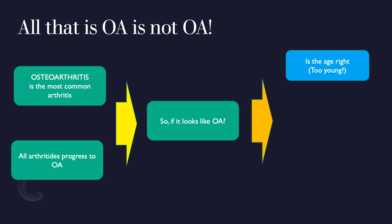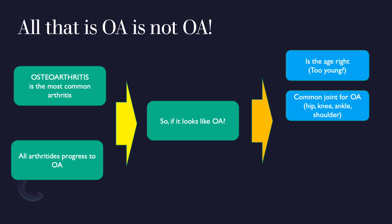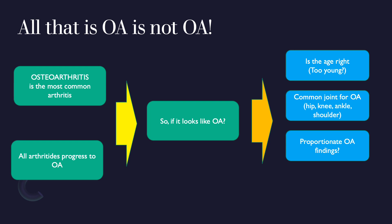What are the clues that tell you something is not primary osteoarthritis? Number one is age — if it's a very young patient, this would likely not be primary OA. Number two is joint location — if it's not a common weight-bearing joint for OA like the hip, knee, ankle, or sometimes the shoulder, that should raise an alarm. Number three involves the pattern of OA changes: joint space narrowing, subchondral sclerosis, cystic changes, and marginal osteophytes.